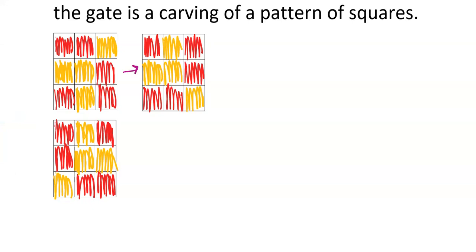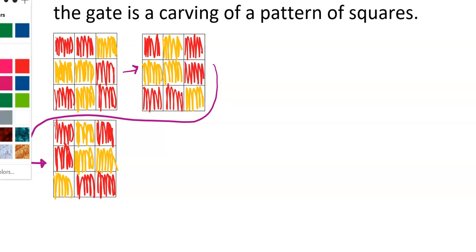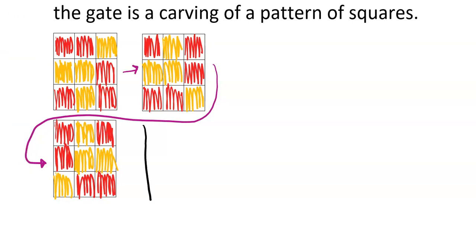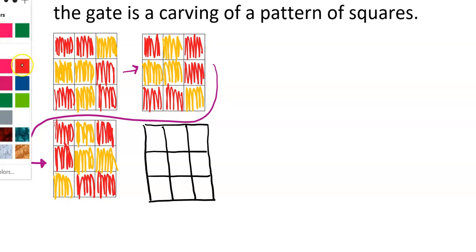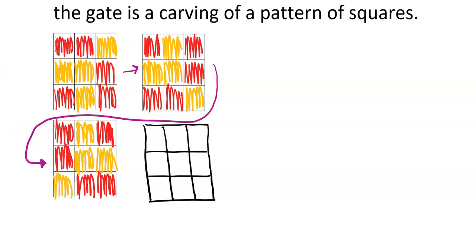First, let's figure out what the fourth one in the pattern is, and then we'll try to figure out the eighth one. The grid is a three-by-three square. We want to figure out where the red and gold ones will be. Looking from the first square to the second, I notice that if I turn it a quarter turn to the right, all the yellows rotate that way. Checking from the second to the third with a quarter turn confirms the pattern.